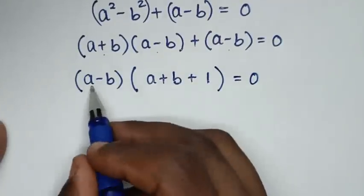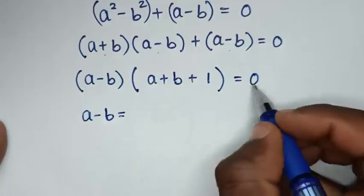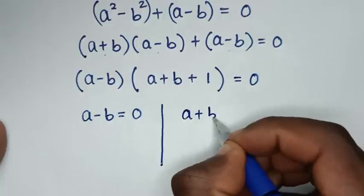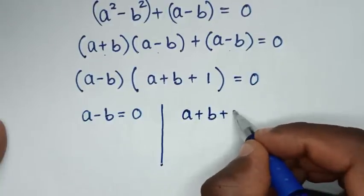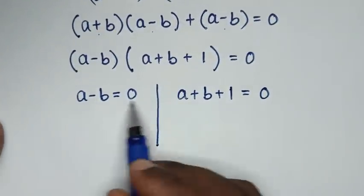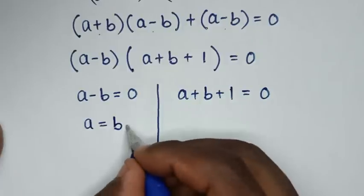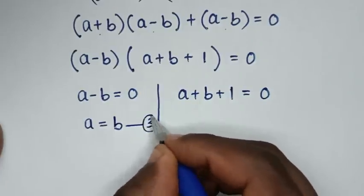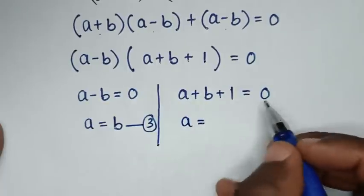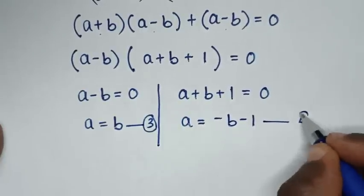From this we have two solutions. The first solution is a minus b equals 0, and the second is a plus b plus 1 equals 0. From the first solution, a equals b — we'll call this equation 3. From the second, making a the subject gives a equals negative b minus 1 — we'll call this equation 4.